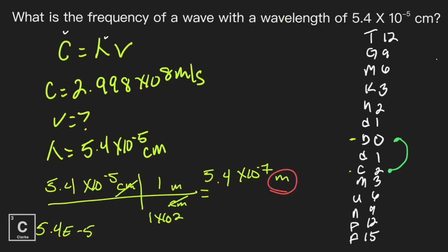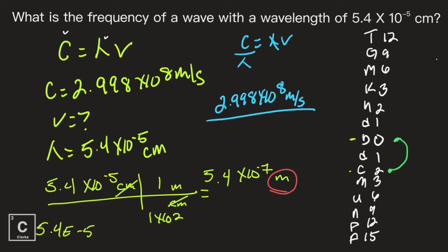I'm going to rearrange my formula to say frequency equals. Speed of light equals wavelength times frequency, so frequency is being multiplied by wavelength. To get wavelength away, I need to divide. So frequency equals speed of light divided by wavelength. On top I've got the speed of light, 2.998 times 10 to the 8 meters per second, divided by 5.4 times 10 to the negative 7 meters. Typing into my calculator: 2.998 exponent 8 divided by 5.4 exponent negative 7.